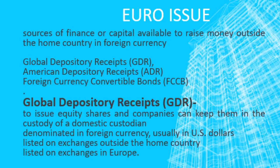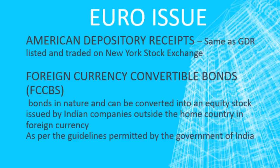The equity shares of GDR of an Indian company are issued by the Indian company and sold in a foreign country — for example, in the USA — by the foreign depository existing there. GDR are usually listed in exchanges in Europe, as Euro issues have to be listed in an exchange, and in the case of GDR, these are listed in the European exchanges.